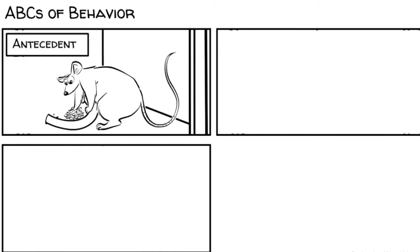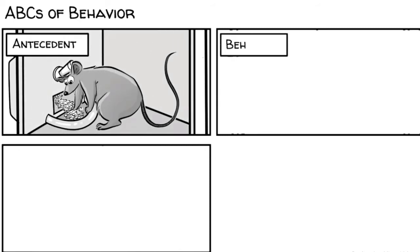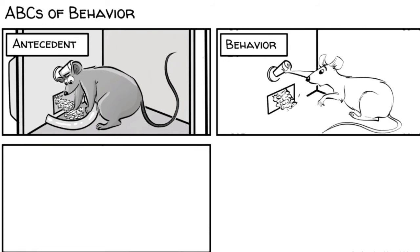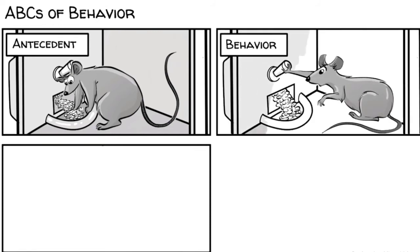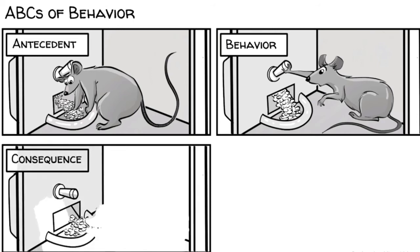Conditioning happens in a three-term contingency, today known as the ABCs of behavior. A stands for antecedent: the rat accidentally hits the lever that triggers the release of food. B stands for behavior, and refers to the response: the rat keeps pressing the lever. C stands for consequence: food keeps coming out.